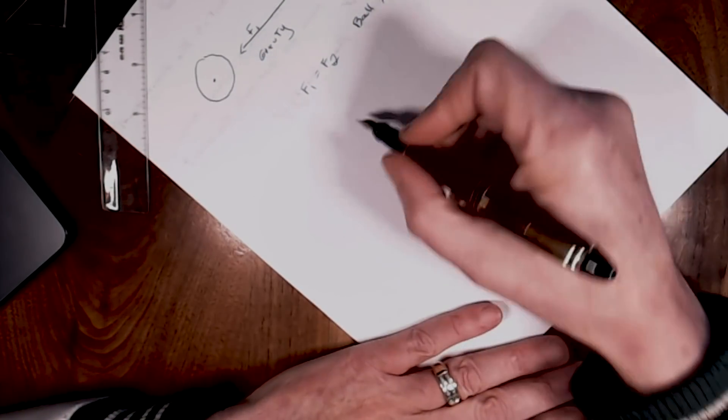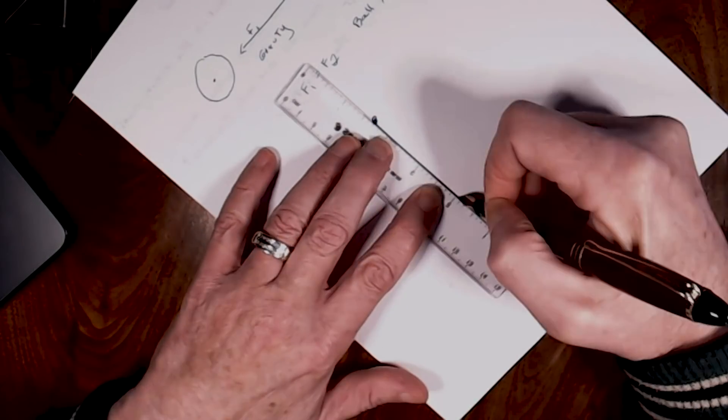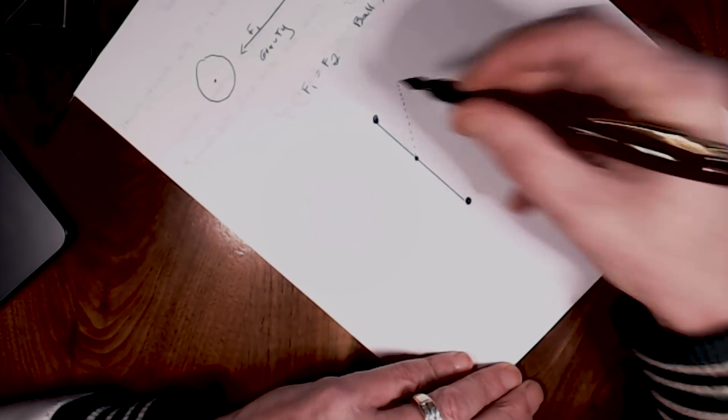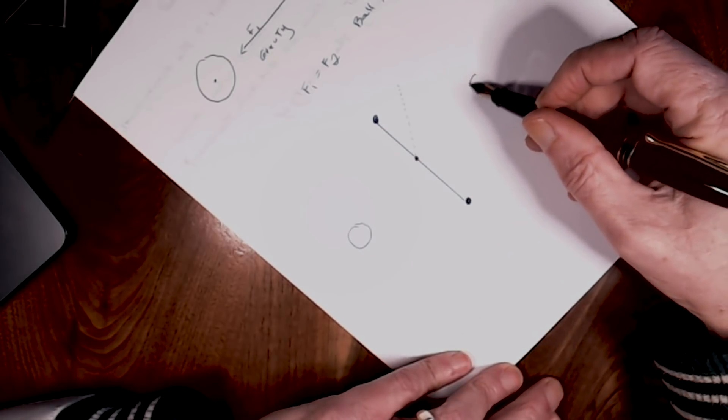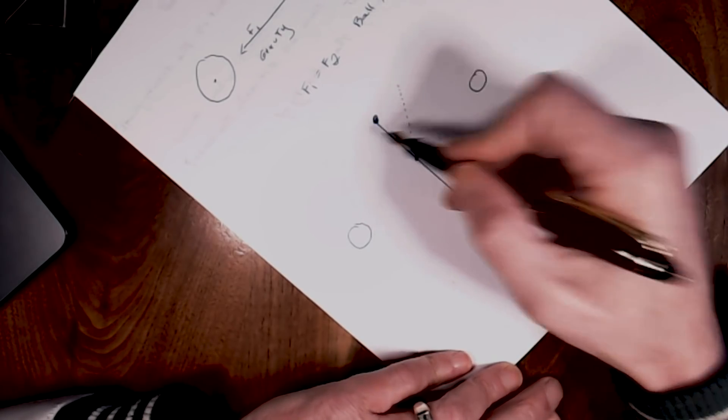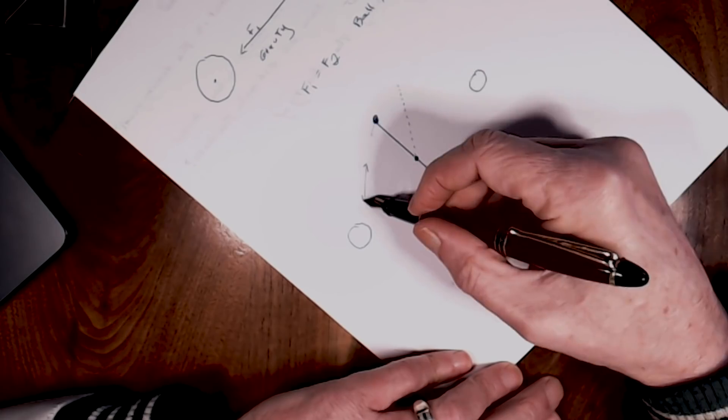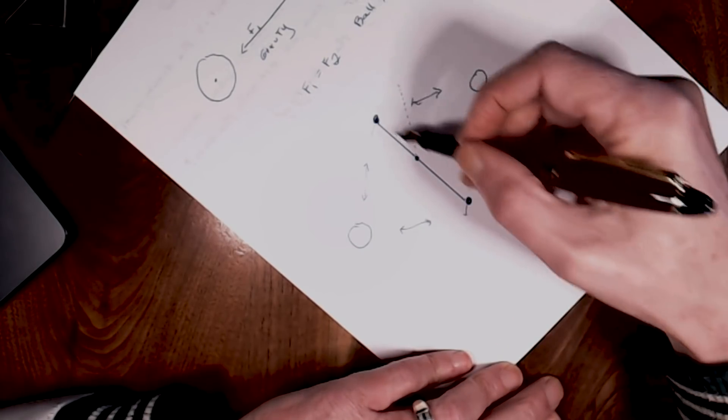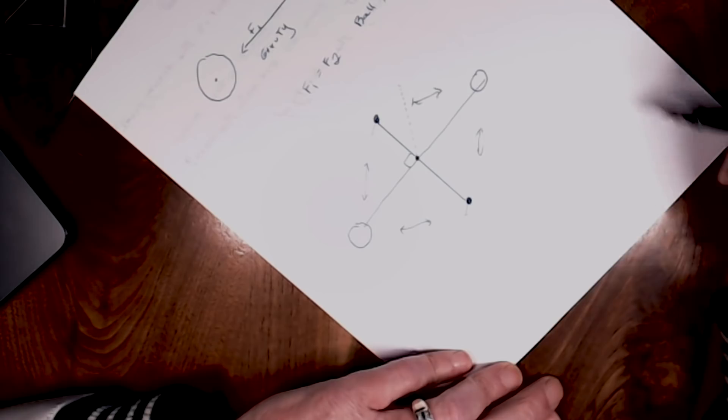So what Cavendish did was he built this apparatus where he had two small balls that were attached by a beam. And in the middle, it was hung from the ceiling by a wire. And then what he did was he took two large balls and put them at 90 degrees to this beam. So the weight of the balls or the gravitational attraction of the Earth was equal on both sides. So that was no longer a factor. The attraction of the small balls to the big balls was also balanced. And what he did was he adjusted this until it was a perfect right angle between these two balls, and all the forces were in balance.